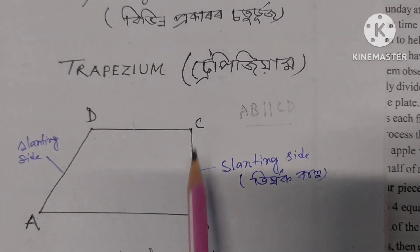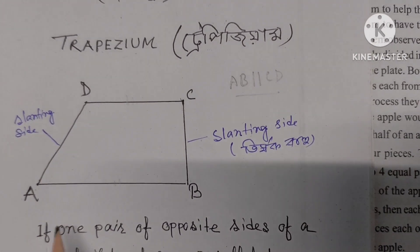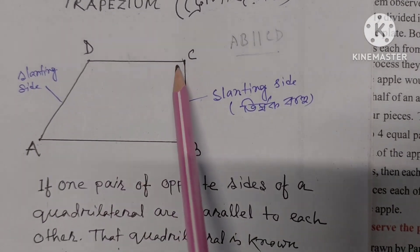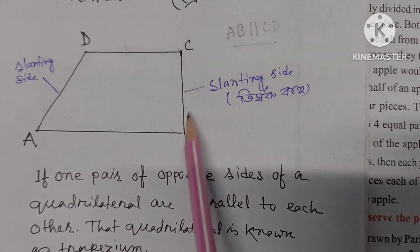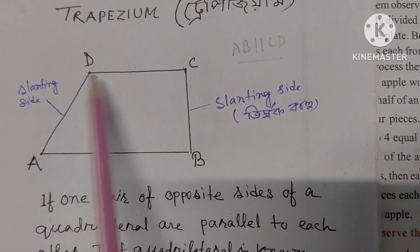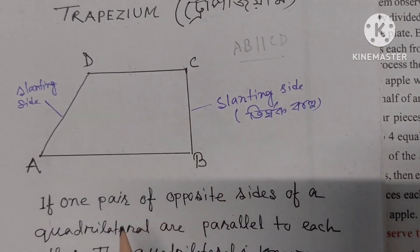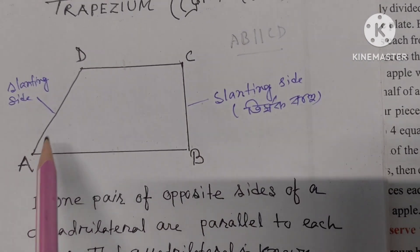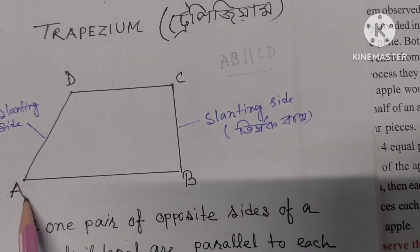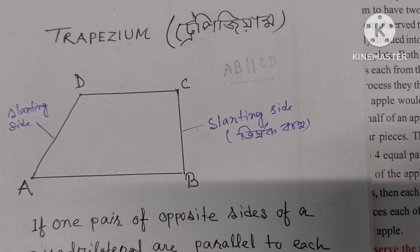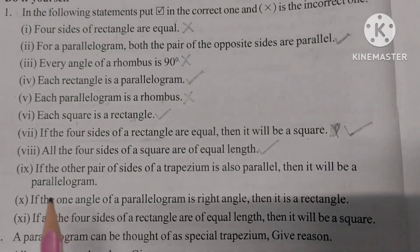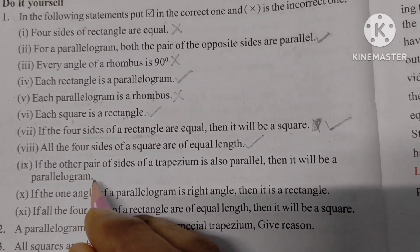Consider quadrilateral ABCD as a trapezium. Here, AB and CD are parallel, but AD and BC are not parallel — they are slanting sides. If AD and BC also become parallel, then it will be a parallelogram. Since one pair of opposite sides AB and CD is parallel, ABCD qualifies as a trapezium. Therefore, this statement is correct.